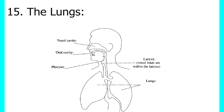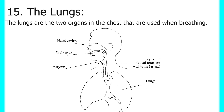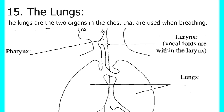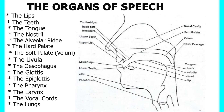And lastly, we have the lungs — though not the least important. The lungs are the two organs in the chest used when breathing, and breathing goes hand in hand with speaking. Speech sounds are produced with air coming from the lungs through the trachea, the larynx, and all other organs, coming out through either the oral cavity or the nasal cavity. Each organ is important because without one, speech would be impossible. So those are the organs of speech involved in the production of speech sounds in English.